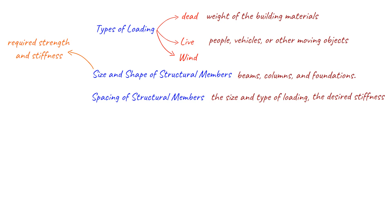For example, a structure that needs to be very stiff, such as a high-rise building, would have structural members that are spaced closer together, whereas a structure that needs to be more flexible, such as a bridge, would have structural members that are spaced farther apart.